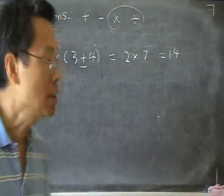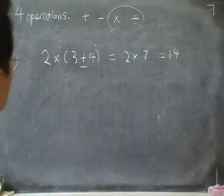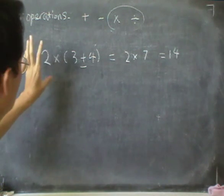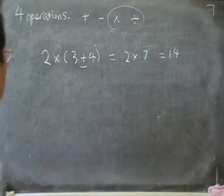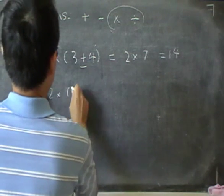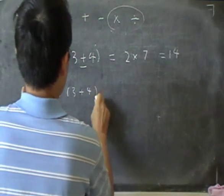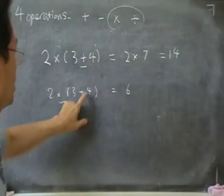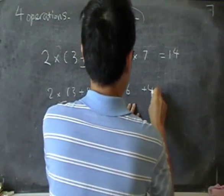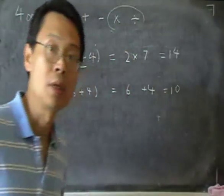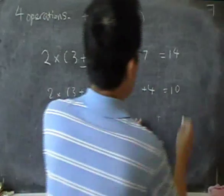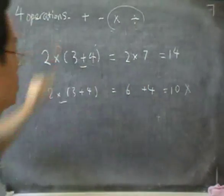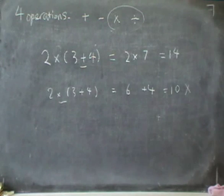Now, that's very important. Again, let's see what happens if we ignore that rule. If I just go from left to right and just do 2 × 3 first, that gives 6. And then I do a plus 4, that gives 10. You see, the answer is different. And this answer is wrong because I'm supposed to do the bracket first.